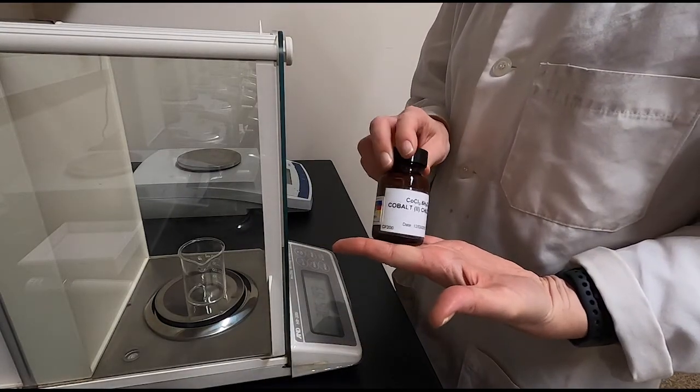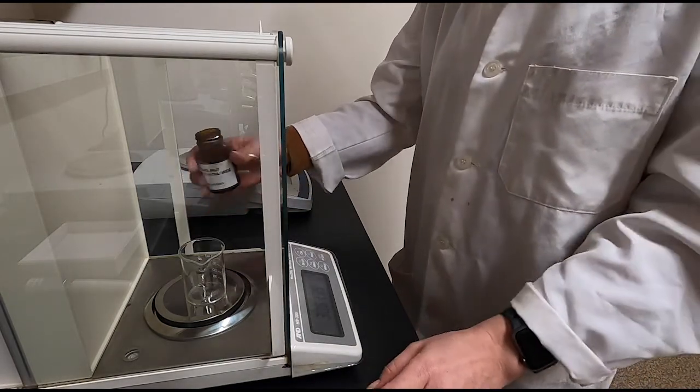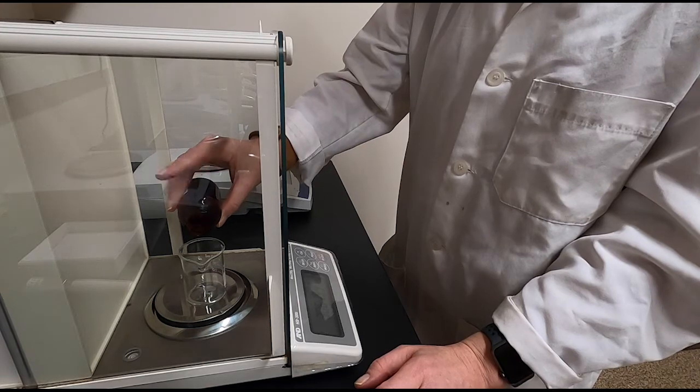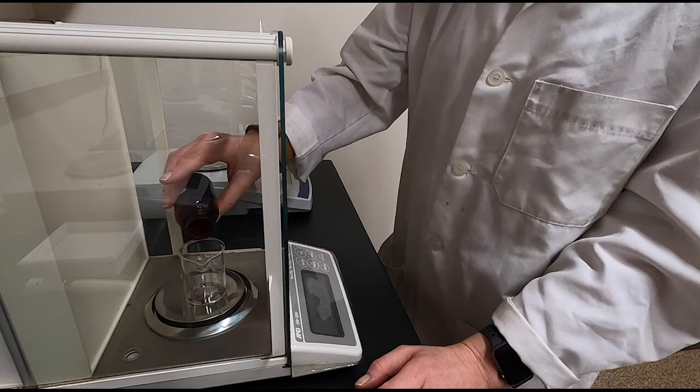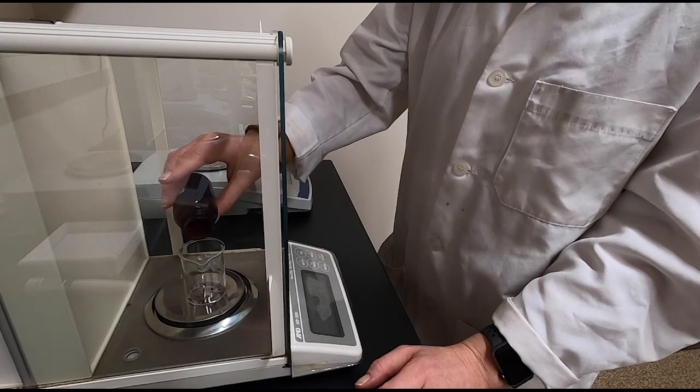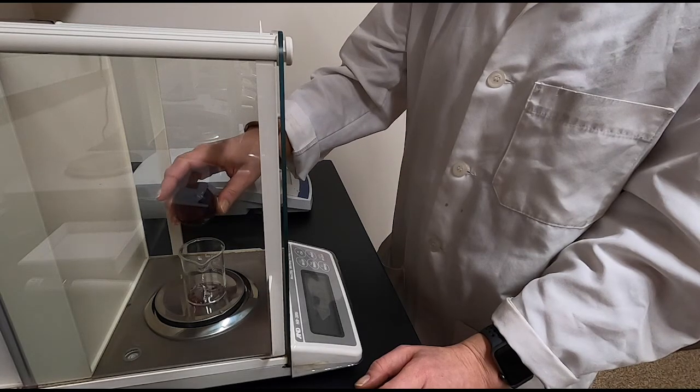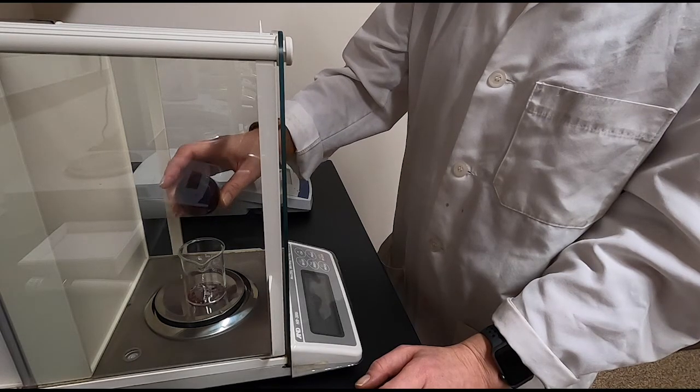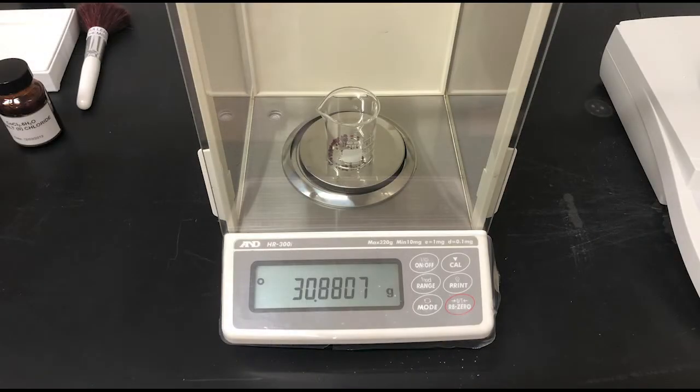Now I'm going to weigh out between 0.25 and 0.3 grams of the cobalt-2 chloride hexahydrate. We're weighing by difference this time, so you want to write down the mass of the beaker plus the solid so that you can find the mass of the solid.